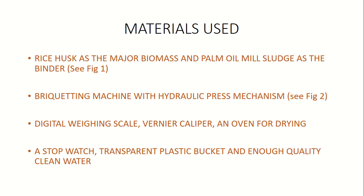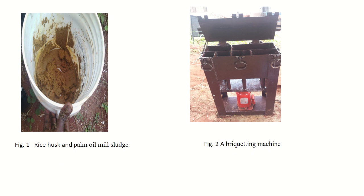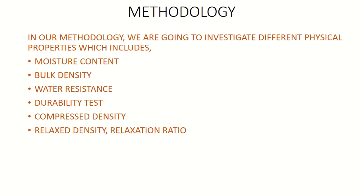The materials used are rice husk as the major biomass, and biomass is also used as the binder. We use an hydraulic press mechanism briquette machine, which we will see in figure 2. This is the rice husk and oil sludge mixed together, and here is the briquette machine — the hydraulic press briquette machine.